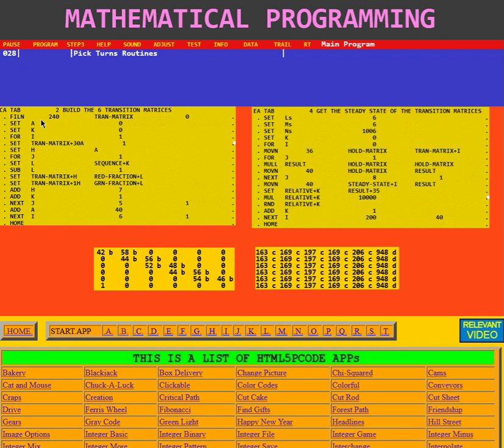The first routine starts out saying fill numerically 240 values at trans matrix with zero. Well there are six matrices that it's going to make. Each one is 40 in size so it's zeroing all of them out. They're all going to be in trans matrix.